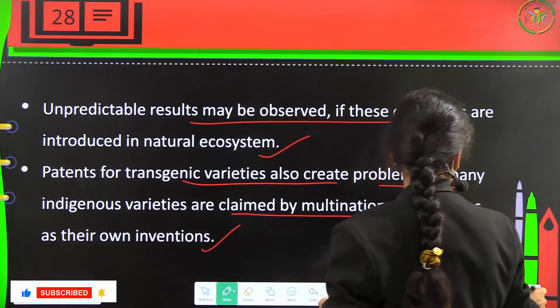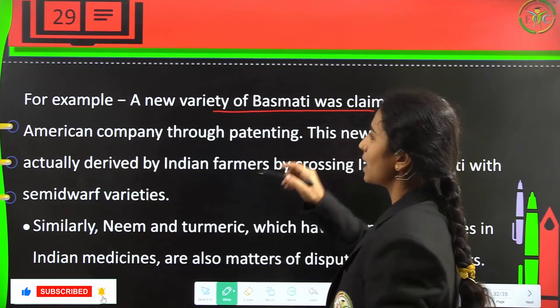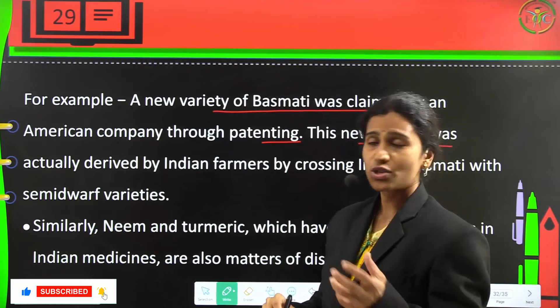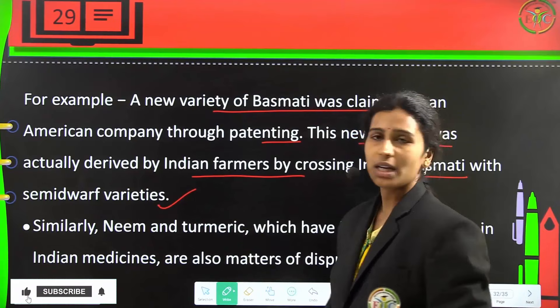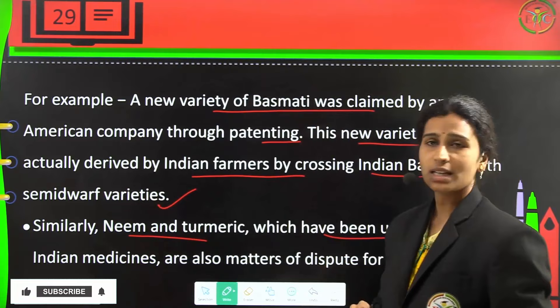For example, a new variety of basmati was claimed by an American company through patenting. This variety was actually derived from Indian farmers by crossing Indian basmati with semi-dwarf varieties. Similarly, neem and turmeric, which have been used for ages in Indian medicine, are also matters of dispute in patent rights.